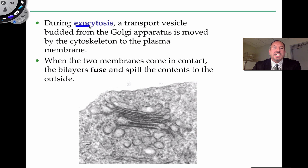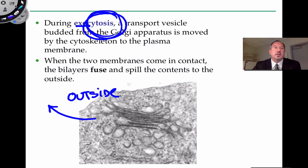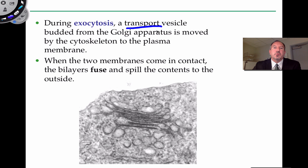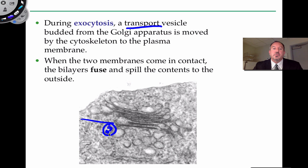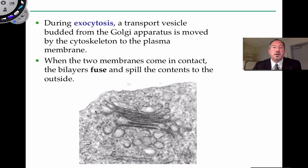When the two membranes fuse, the contents are released or spilled to the outside — that's called exocytosis, because you're exiting the cell. The cytoskeleton is also involved in this process, acting sort of like a monorail directing those transport vesicles to the outside. There are motor proteins involved in that as well.